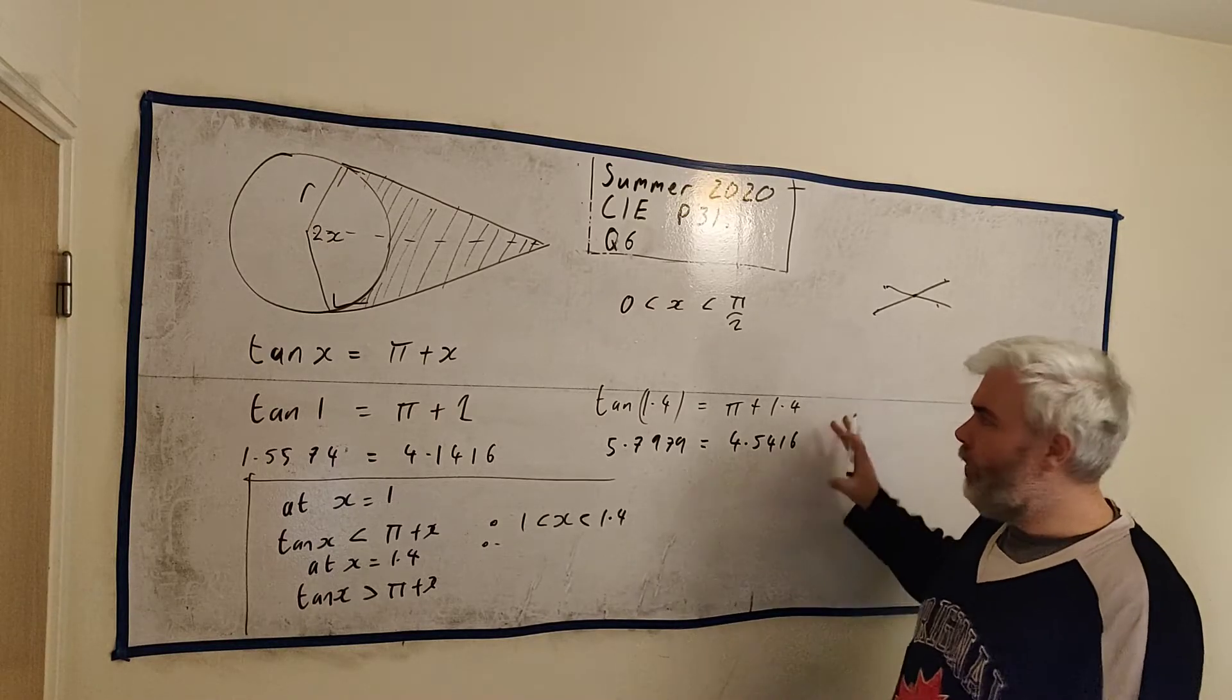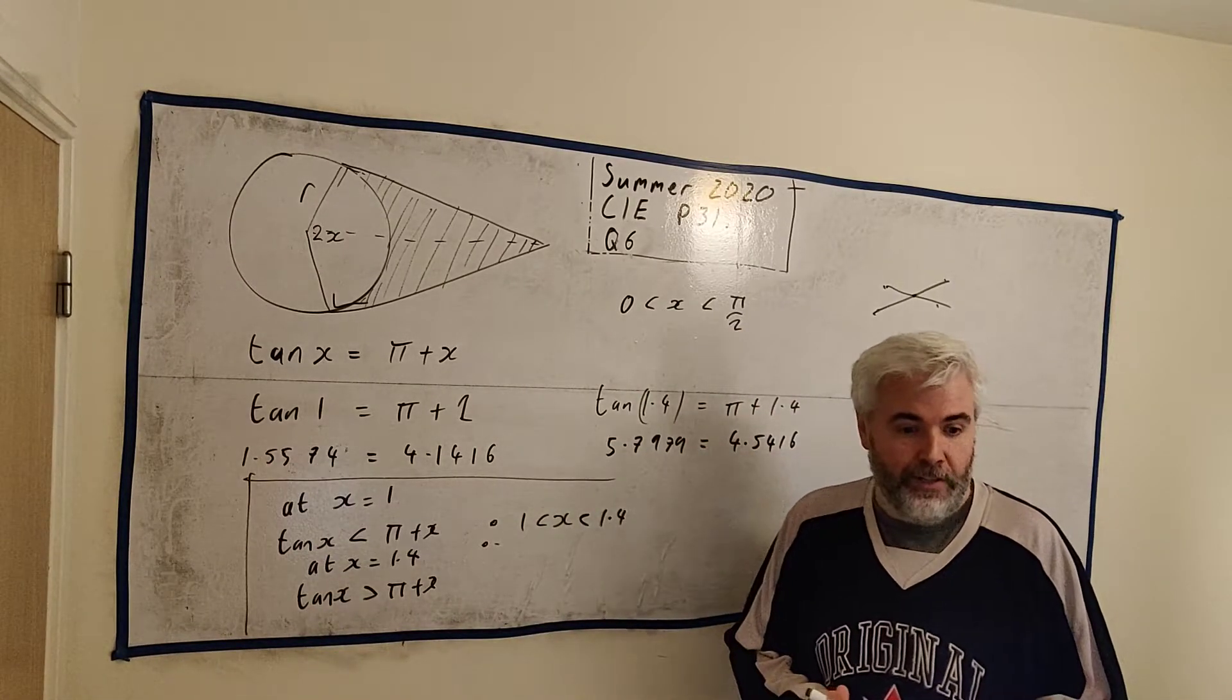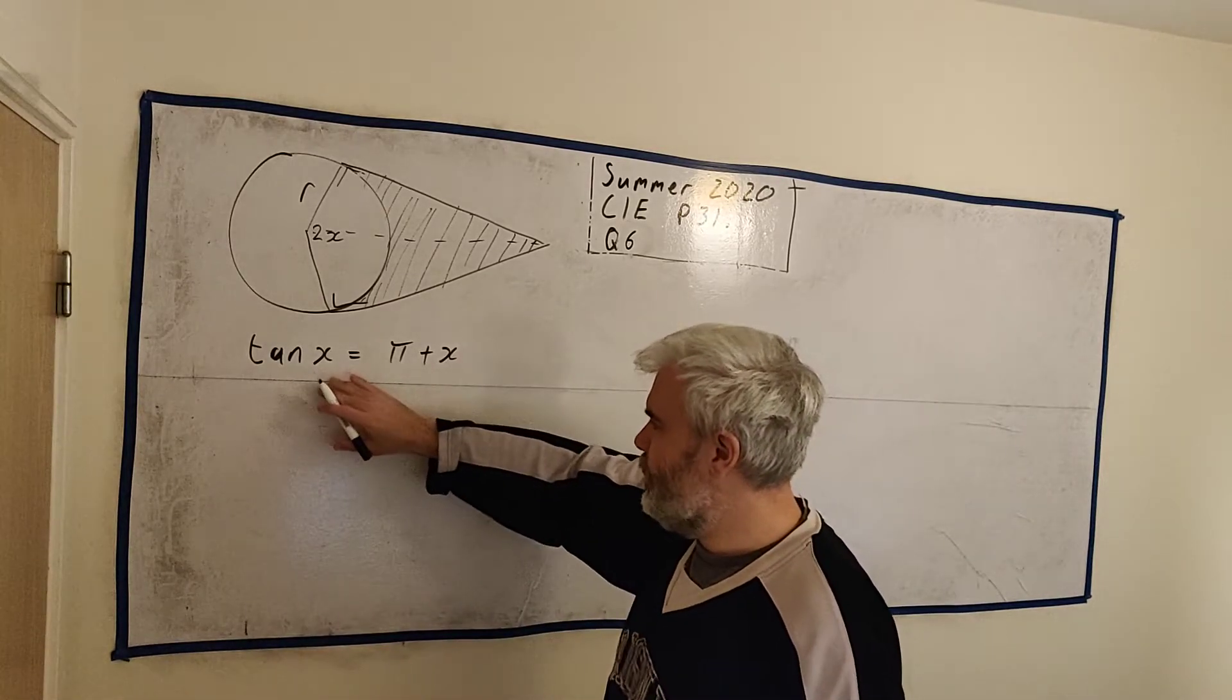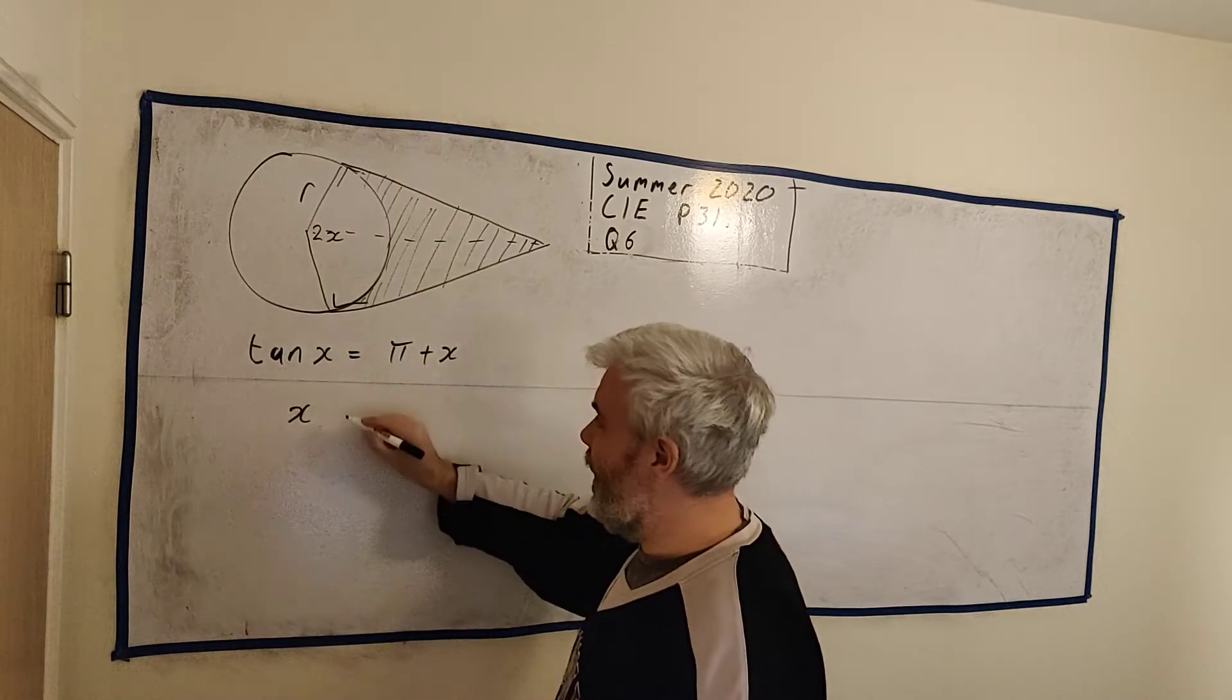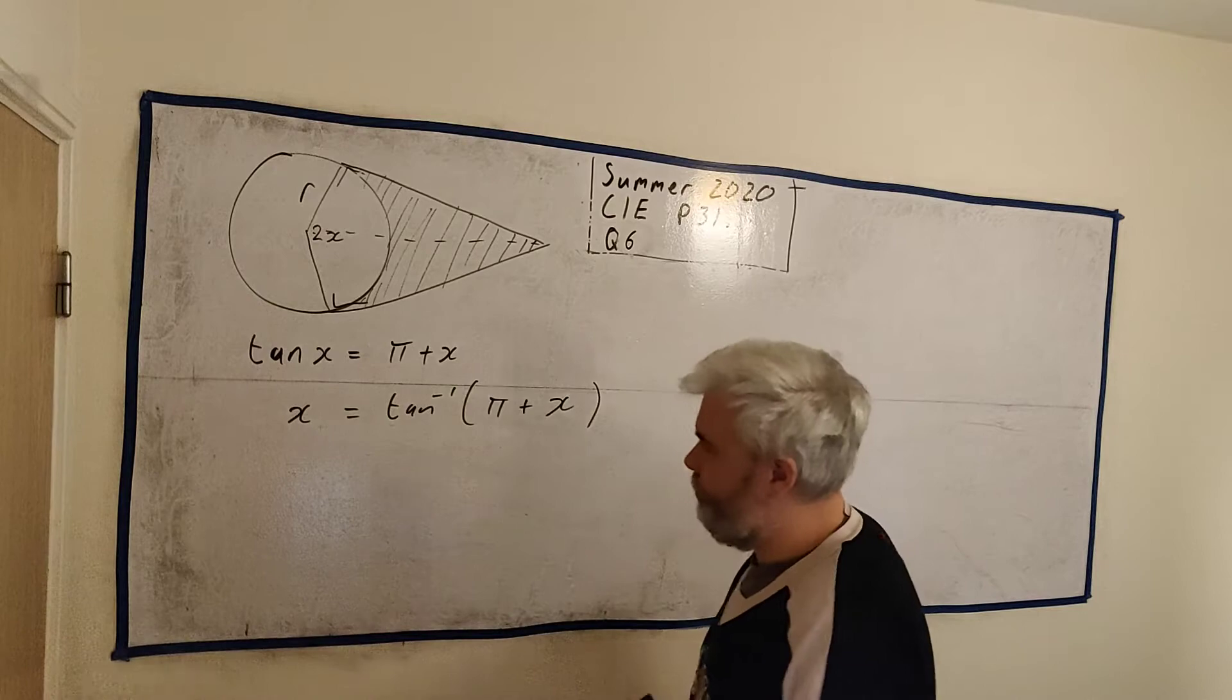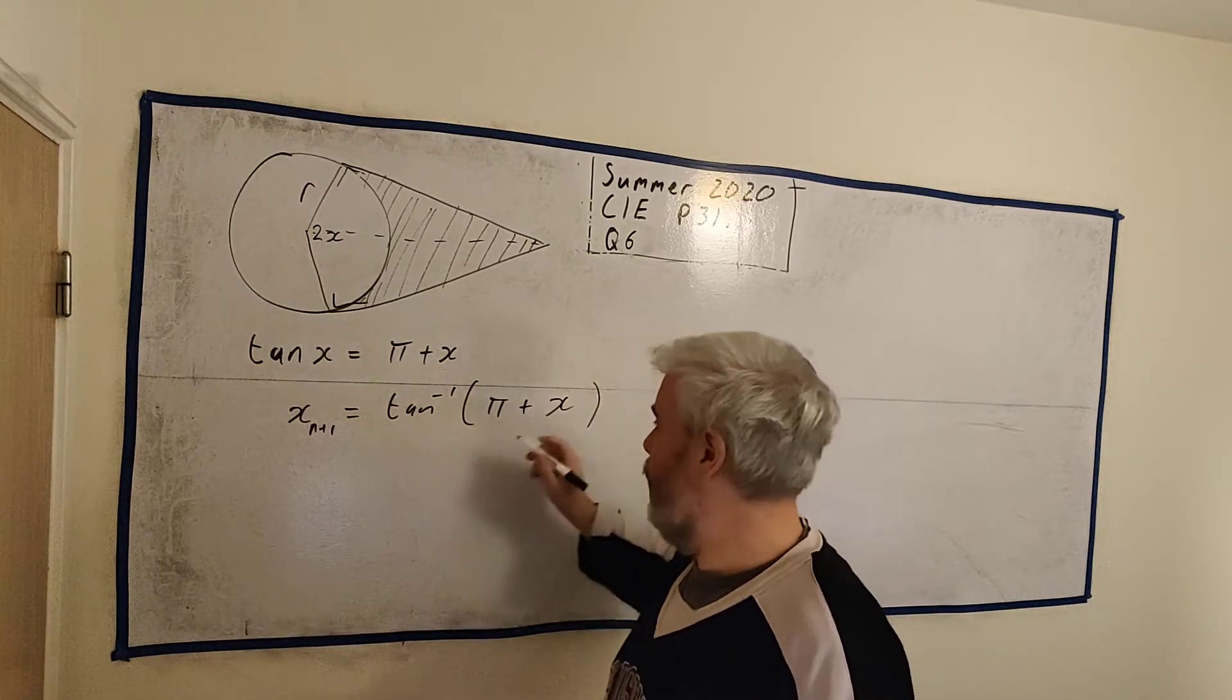For part C, I'll go ahead and rub this out. Part C would ask us to use the iterative formula, and that's when we have x on its own. In this case, we don't yet, but they've set it up for us. Basically, you just get tangent, the inverse tan of both sides. The inverse tan of the left is x, the inverse tan of the right is this. When we have something where x is on its own and there's an x in here, what we can do is basically just write n plus 1 here and an n here. If we make a guess at x, put it in here, the next guess will be here.